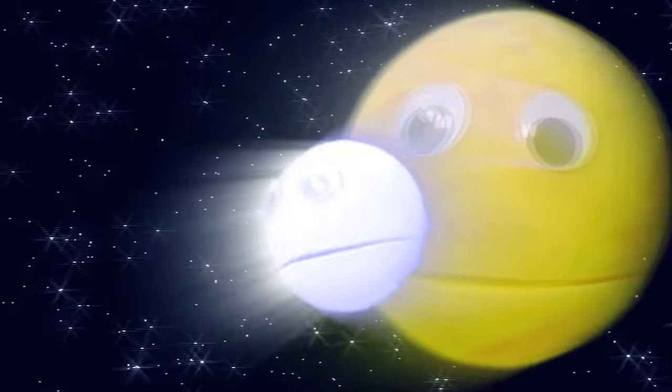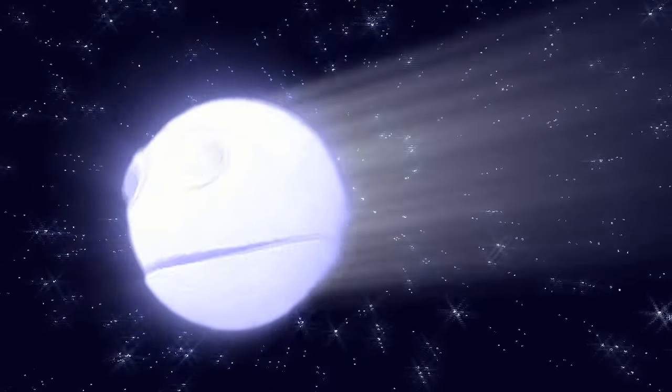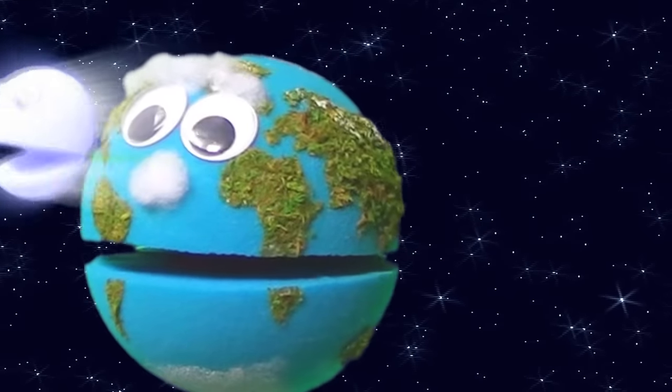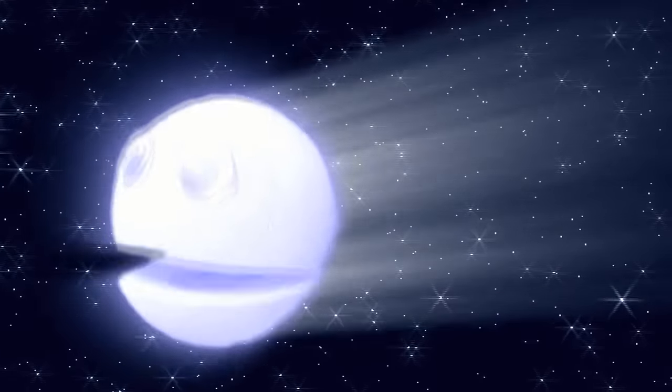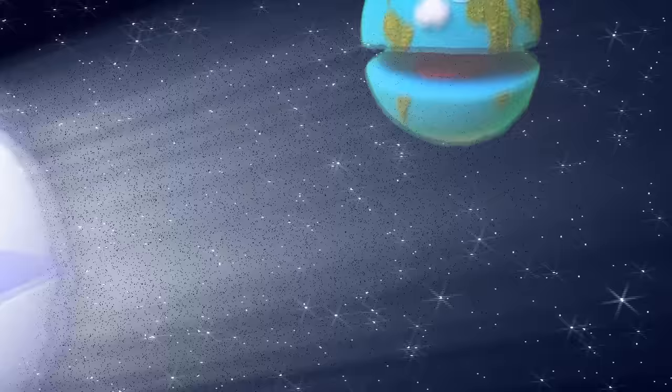I'm Halley's Comet and I orbit the sun. If you are lucky in 2061 you can see me reappear. I pass by the Earth every 76 years. I'm a periodic comet, I keep coming back with an orbit less than 200 years. I'm easy to track.